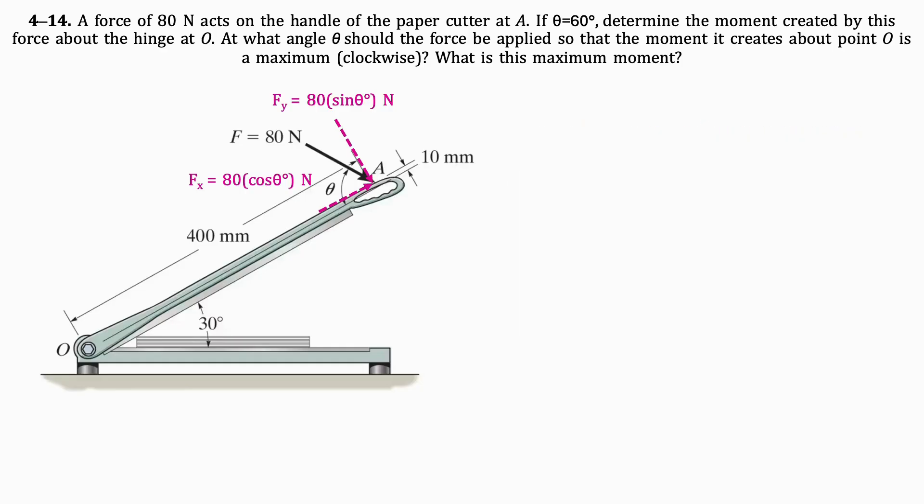To find the moment of F about O, we will add its x and y components together. The moment of the y component about O is the y component of the force times its distance from O, which is 0.4 meters.